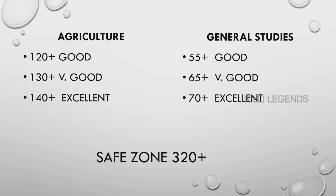For example, if you are above average — 55 plus is a good attempt. If you are above average equal, you will have 55 marks. That is, 65 plus is very good, and 70 plus marks is an excellent attempt.